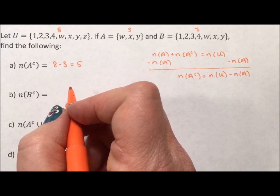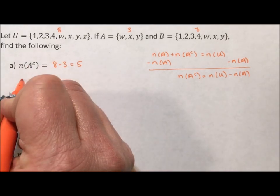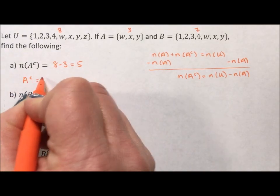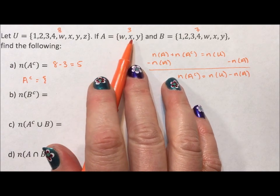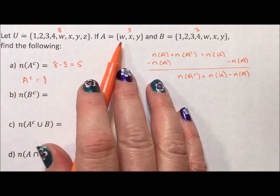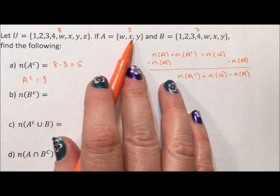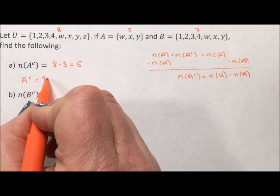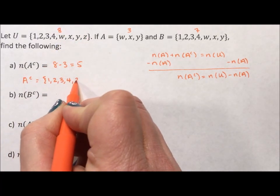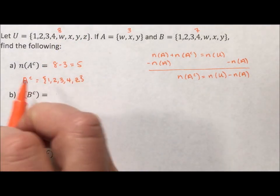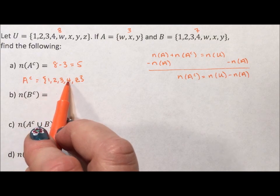But sometimes it's nice to have something a little more tangible. So I could just come in and give A's complement. The complement of A is made up of all the elements in the universe that don't belong in A. Well, A is W, X, Y, so the complement is 1, 2, 3, 4, Z. And if I count up the number of elements, I have 1, 2, 3, 4, 5.